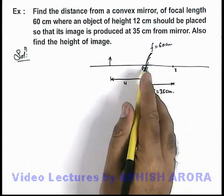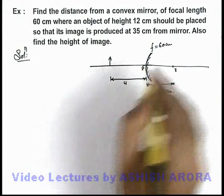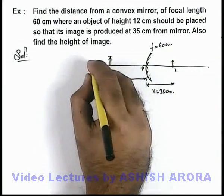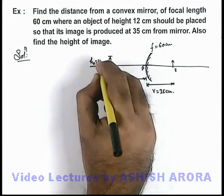We know that for an object in front of a convex mirror, the image produced is virtual and erect. Here the object size is given as h₀ equals 12 centimeters.